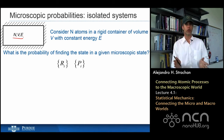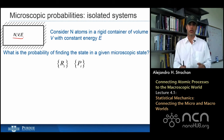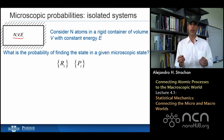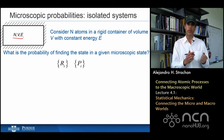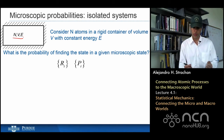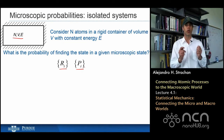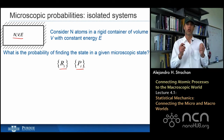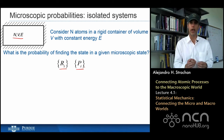Given the fact that I have a system under these conditions, what is the probability of finding the system at a given set of positions r_i and momenta p_i? What is the probability of finding the system at a specific microscopic state?